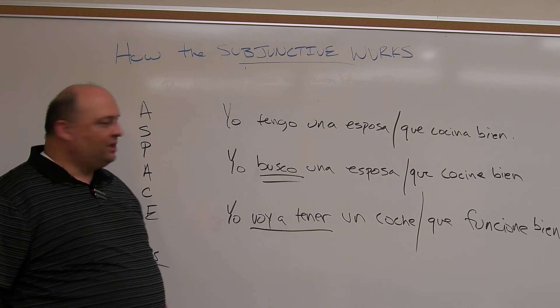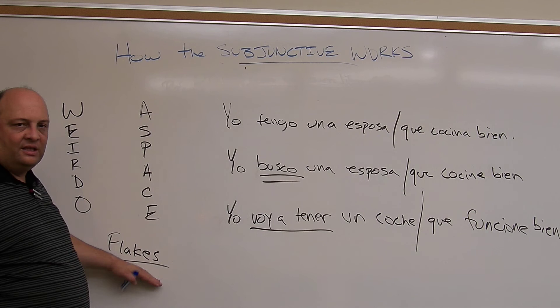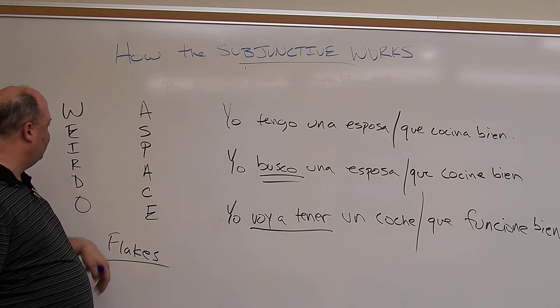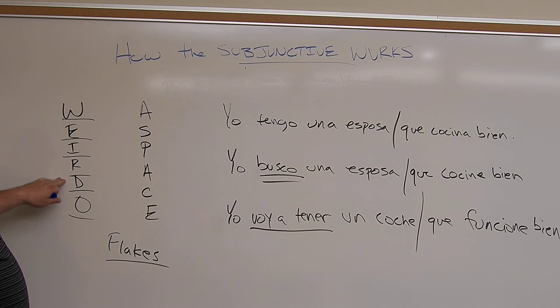So those are the three things the dependent clause doesn't like — WEIRDO, SPACE, and FLAKES. We're not going to get too deep into FLAKES this semester — we're mostly focused on WEIRDO. It's really the WEIRDO categories we're going into now: will, wish, desire, emotions, impersonal expressions, recommendations, requests, doubt, denial, and ojalá. And we cannot change the word order around — in Spanish, it doesn't change. Yo tengo una esposa que cocina bien — it does not change.